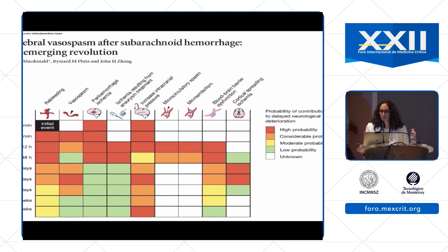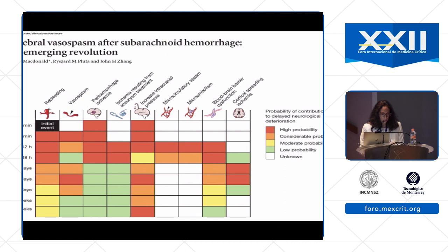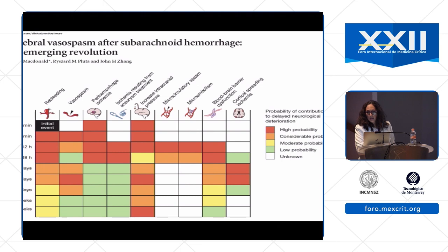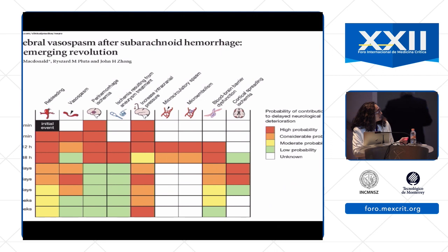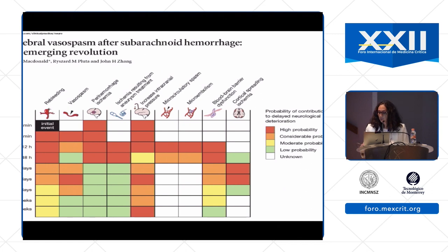Here are things that happen within the first 48 hours of subarachnoid hemorrhage that can lead to poorer outcomes — many happening at a microscopic level. These include re-bleeding, micro-circulatory spasm, and microembolism. You do recognize elevated intracranial pressure because neurologically the patient will look comatose or obtunded, and you can see hydrocephalus on CT scans.